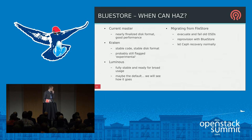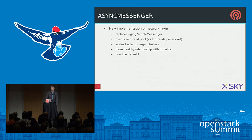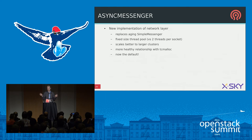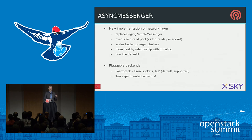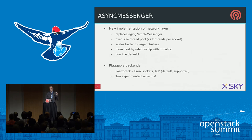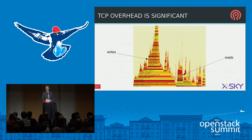Another new item in Kraken is the Async Messenger, which has been in the code tree as experimental but is now the default. This is a reimplementation of the network layer in Ceph, featuring a fixed-size thread pool to avoid thread thrashing from the legacy implementation. It behaves much better with tcmalloc. It also abstracts out the transport layer, so we have the normal TCP sockets implementation but also two experimental backends.